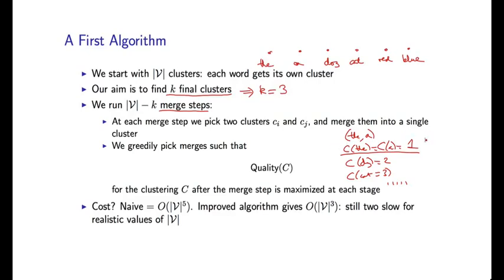Now, each time I consider a potential merge step, I form a new clustering, capital C, and I can calculate the quality for that clustering under the criterion I showed you on the previous slide. So I'm basically going to consider all possible merge steps like this and find the merge step which maximizes the quality of the resulting clustering. So in this case, maybe I would find that merging 'the' and 'a' is actually the merge step that maximizes the value for quality of C.